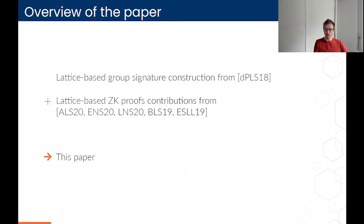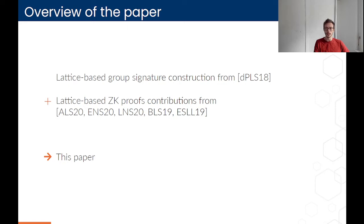Just a quick overview of what the paper is. In 2018 there was a lattice-based group signature construction that was proposed, but since then there's been quite a bit of improvement in lattice-based zero-knowledge proofs — some contributions on efficiency, new techniques, and some about the statements that can be proven. This paper uses these recent results to improve upon the 2018 construction.